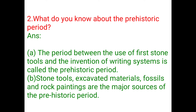Second question: what do you know about the prehistoric period? Answer. First point, the period between the use of first stone tools and the invention of writing systems is called the prehistoric period. Second point, stone tools, excavated materials, fossils, and rock paintings are the major sources of the prehistoric period.